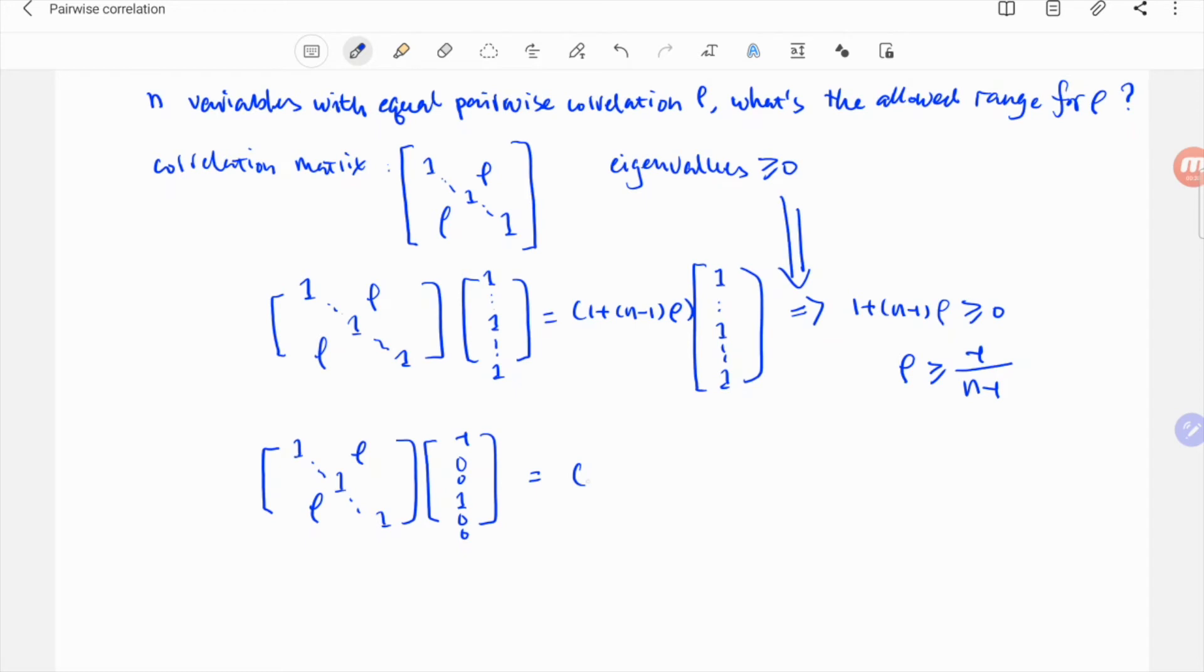You see we get 1 minus rho times this vector itself. So this is an eigenvector with 1 minus rho as its corresponding eigenvalue. Again, it needs to be non-negative.